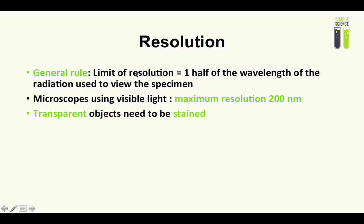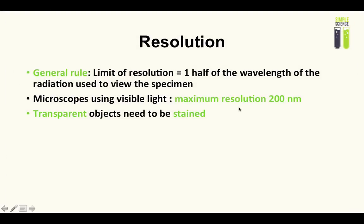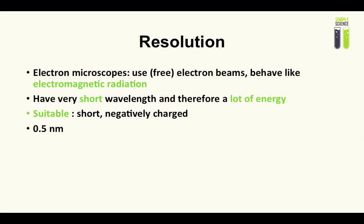The general rule is that the limit of resolution is one half of the wavelength of the radiation used to view the specimen. For light microscopes, the lowest wavelength of visible light is 400 nanometers, so divide by half — that gives 200 nanometers. Therefore the maximum resolution for a light microscope is 200 nanometers. Also note: transparent objects need to be stained for light microscopes, otherwise light will just travel through and you cannot see anything.